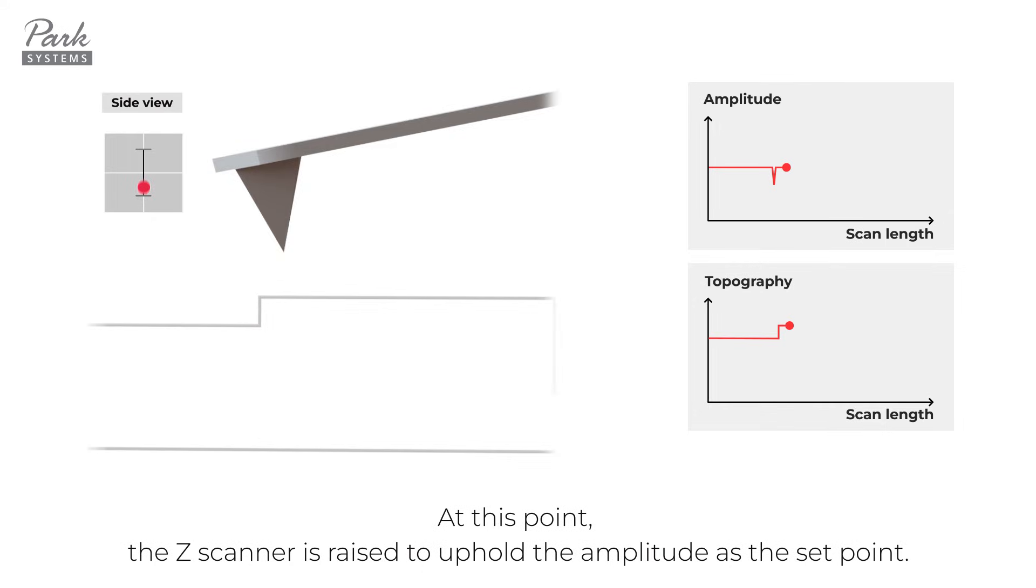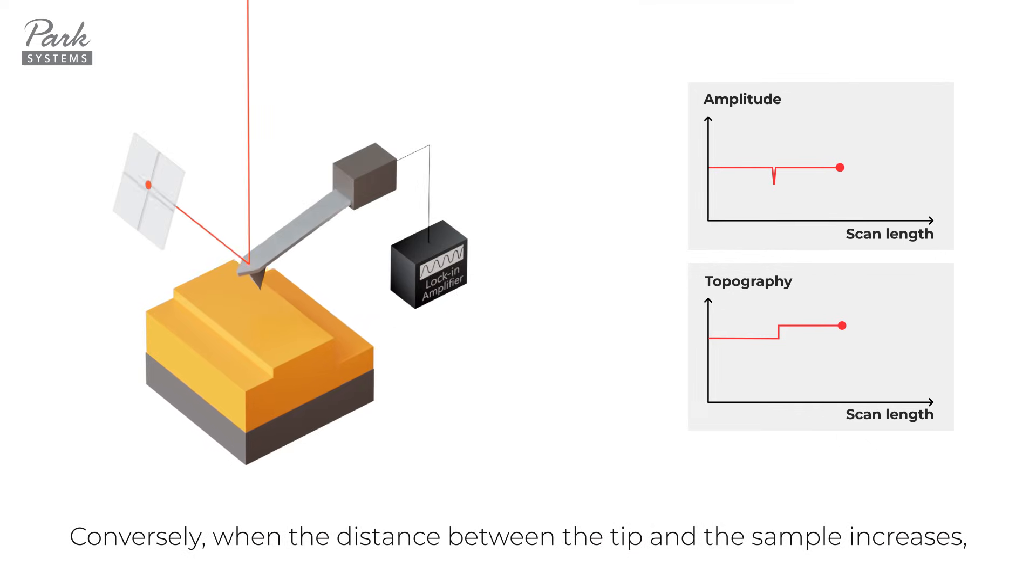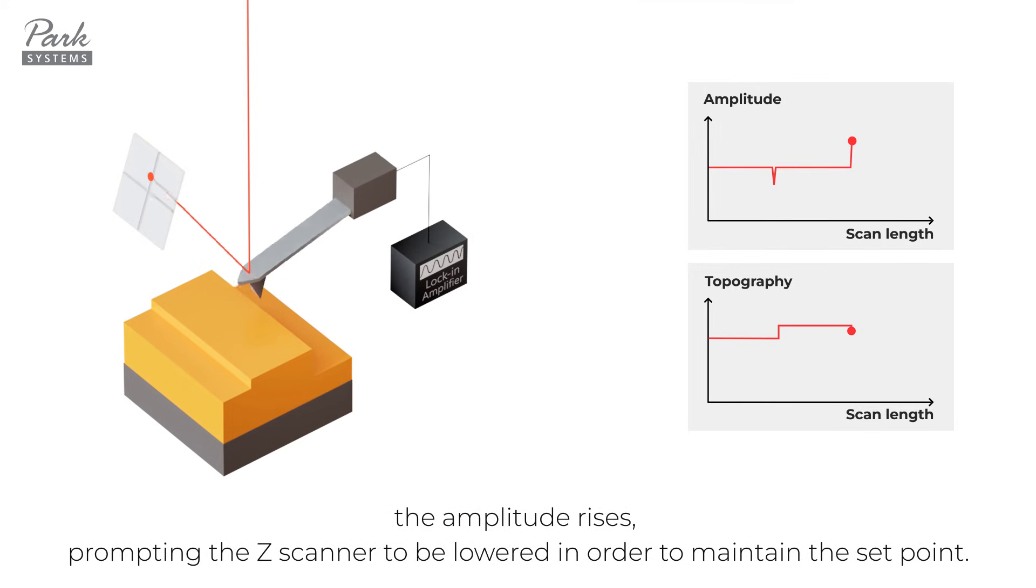At this point, the Z-scanner is raised to uphold the amplitude as the set point. Conversely, when the distance between the tip and the sample increases, the amplitude rises, prompting the Z-scanner to be lowered in order to maintain the set point.